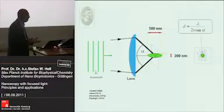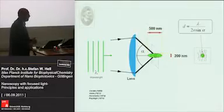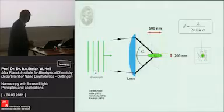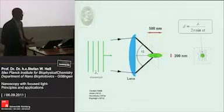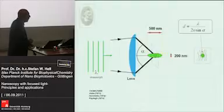No detector will ever be able to separate them if they are of the same kind. The man who realized this problem first, with all its consequences, was Ernst Abbe, who lived at the end of the 19th century. He coined this diffraction resolution barrier in an equation still named after him, saying that in order to be separated in a light microscope, two features of the same kind have to be farther apart than the wavelength divided by twice the numerical aperture of the objective lens.